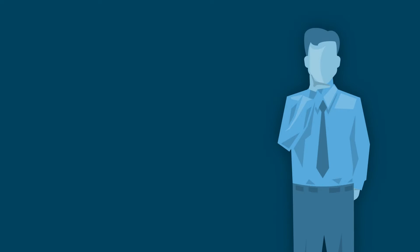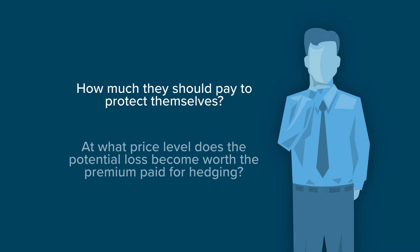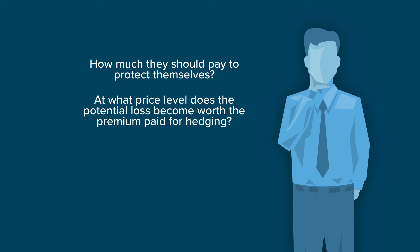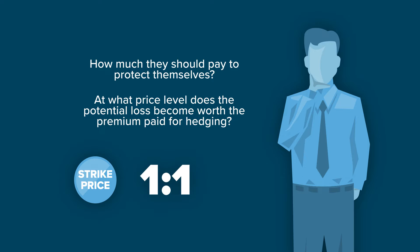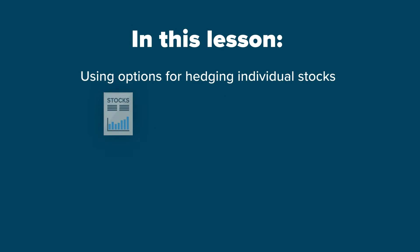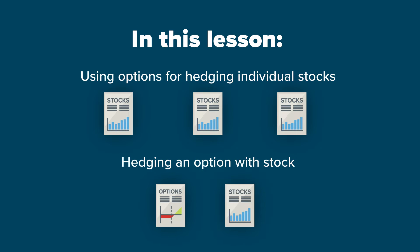Questions that investors ask themselves are how much they should pay to protect themselves, and at what price level does the potential loss become worth the premium paid for hedging? It is the answer to those questions that determines the strike, as well as deciding to hedge one-to-one or using the delta of the option to determine the risk level. In this lesson, we will focus on using options for hedging individual stocks as well as hedging an option with stock.